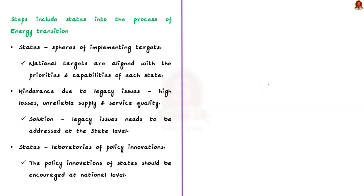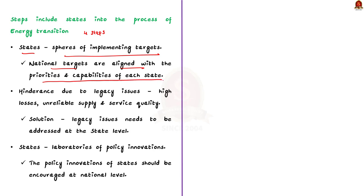Now let us see about the steps needed to include states into the process of energy transition. The author provides four steps for effective energy transition. Firstly, the author says that the states are the spears of implementing targets, so the states are very important to the realization of national targets. Therefore, the national targets should be aligned with the priorities and capabilities of each state, which would be helpful to achieve the targets in time. Secondly, the author says that legacy issues in the electricity sector — such as high losses, unreliable supply and poor service quality — could be a potential hindrance to energy transition, and these issues are mostly embedded in state political economy, so they must be addressed at state level.